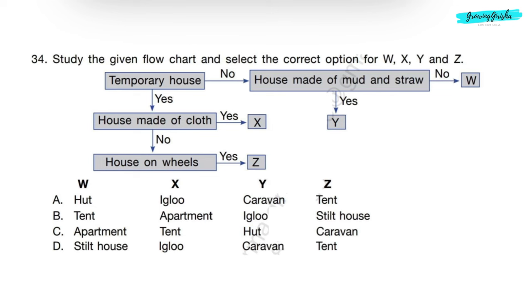Now, we'll find out X. Temporary house? Yes. House made of cloth? Yes. Means X is a tent.